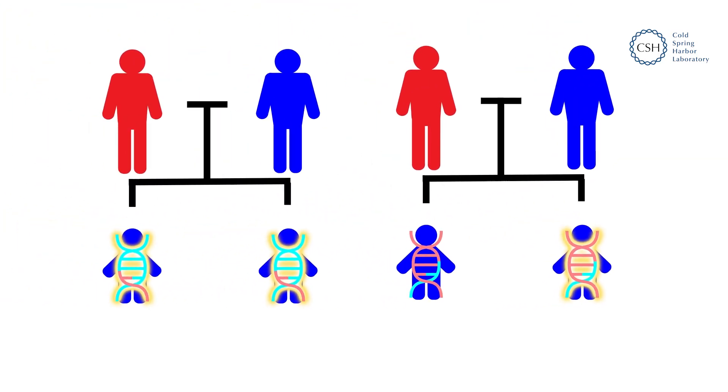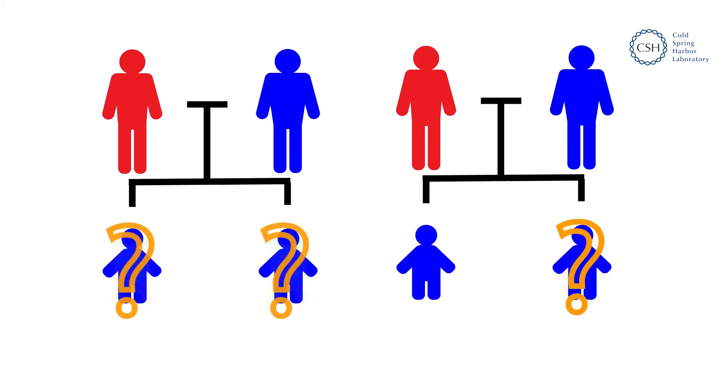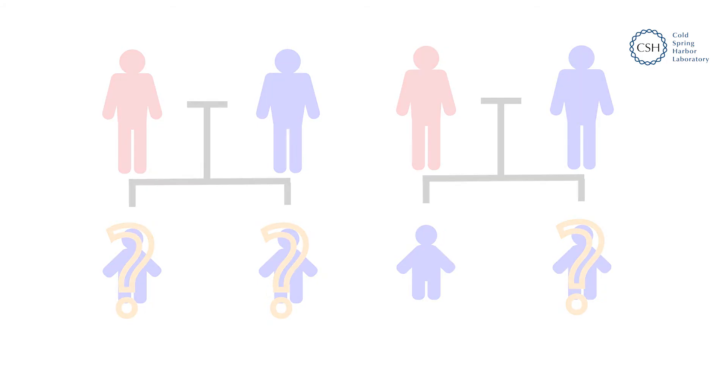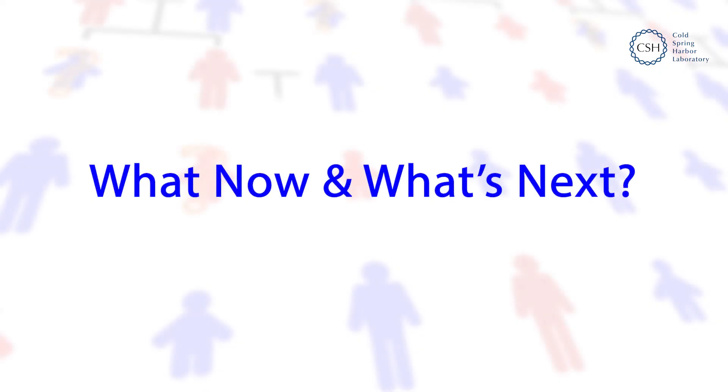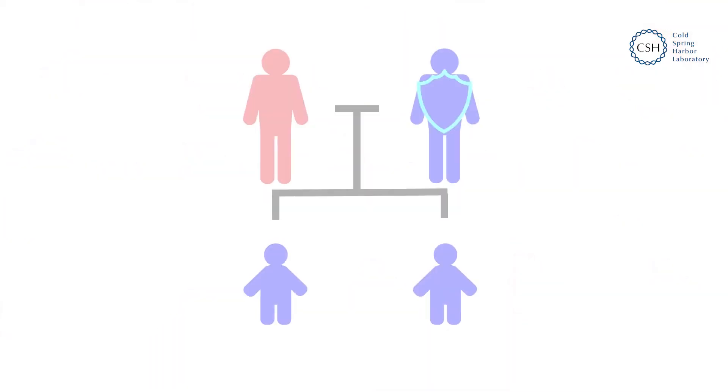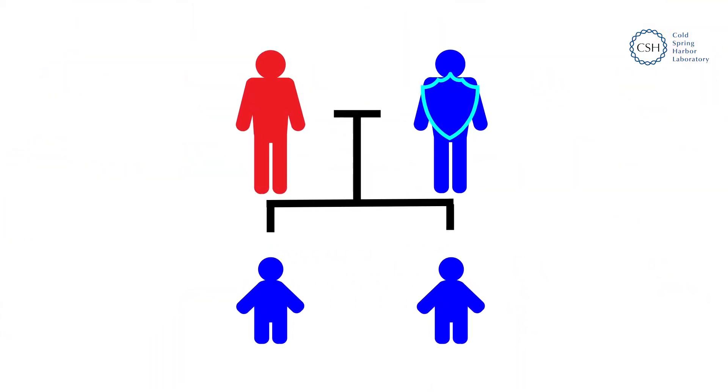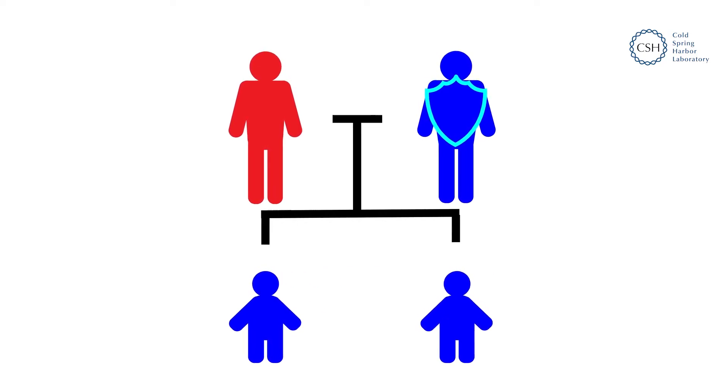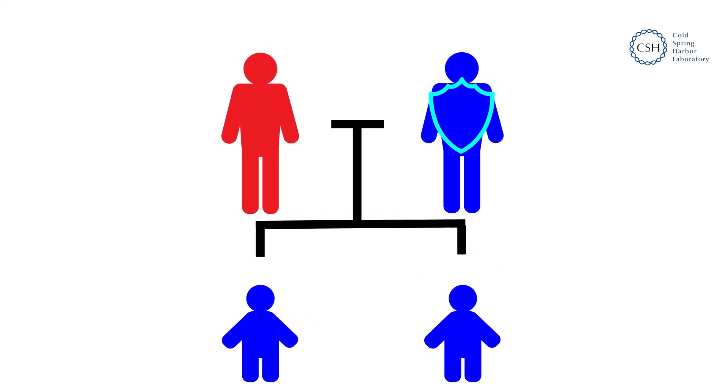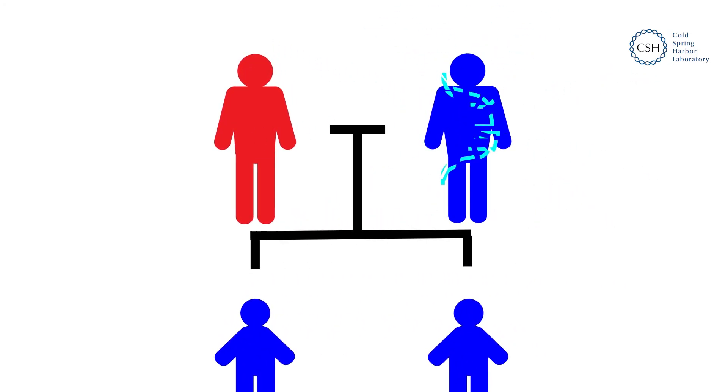Why is this happening? Scientists aren't sure, but they have a few ideas. It could be that some dads carry autism genes as well as protective genes that prevent them from being born with ASD themselves.